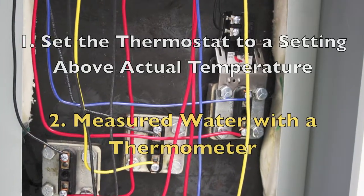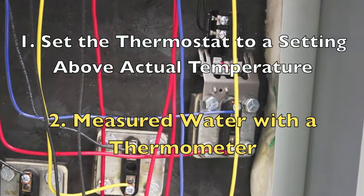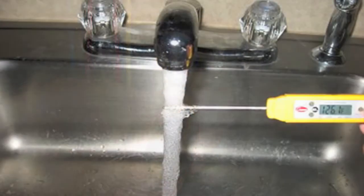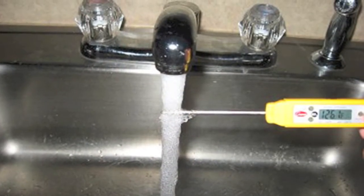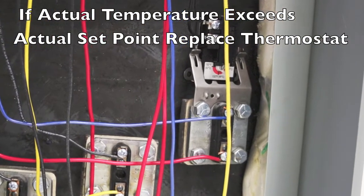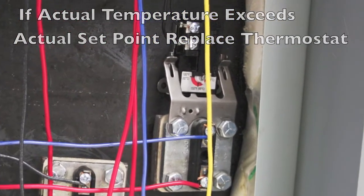To verify the thermostat is operating properly, set the thermostat to a setting above actual temperature. Allow heater to satisfy. A sample taken from the closest tap, measured with a thermometer, should be within the range of the actual setting. If actual temperature exceeds actual set point, replace the thermostat.